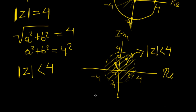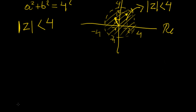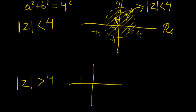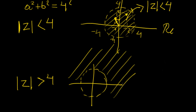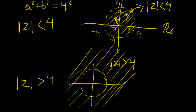If we had the opposite — the magnitude of z greater than 4 — we draw the same dotted circle, but now the region lies outside. We're taking all complex numbers that lie outside that circle, going to infinity, and excluding all numbers within the circle. We also exclude the ones lying exactly on that circumference, since it's strictly greater than 4.